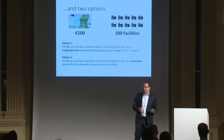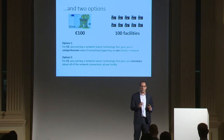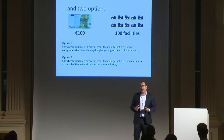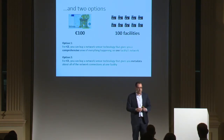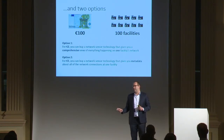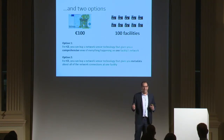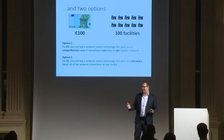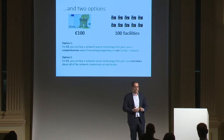You've got two options. Option one: for 2 euro, you get a network sensor that tells you absolutely everything about what's going on in one site — full visibility into all network communications and everything happening among the network nodes and industrial devices. Option two costs only 1 euro, but in exchange you only get metadata — who talked to who, some characteristics of that conversation. So which one would you choose?